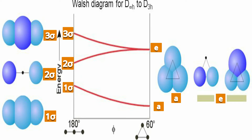Let us understand it one by one. In this picture, the left side shows interactions between wave functions. By sky blue color, positive phase is represented, and by dark blue color, negative phase is represented. At the extreme left side, bottom portion, the 1σ orbital is represented — all have positive wave function, and psi-1 group orbitals both have positive wave functions. So all have proper interaction, strong attraction.